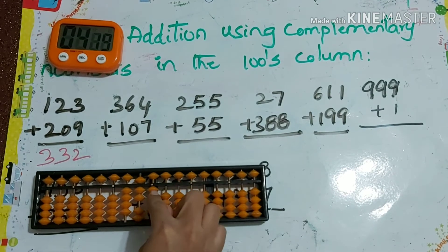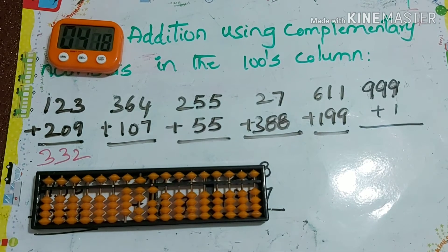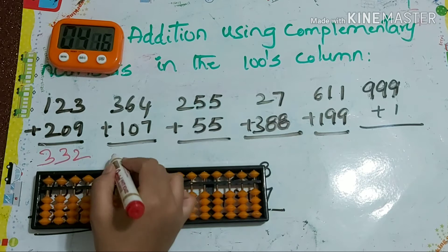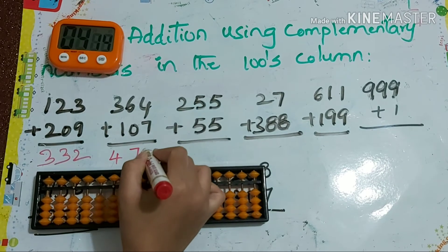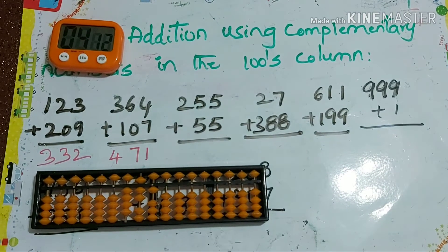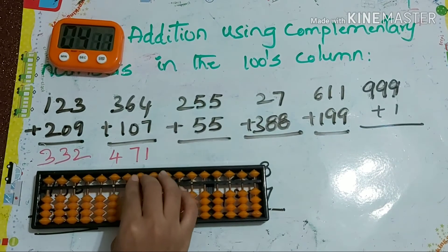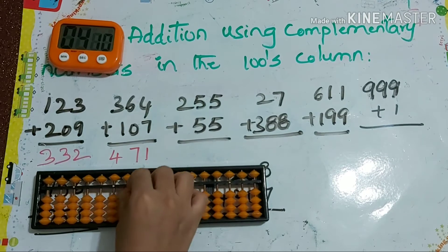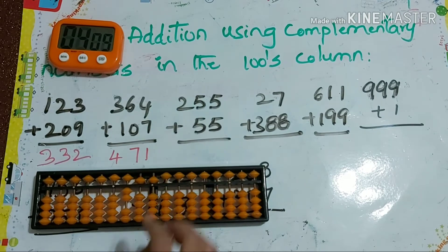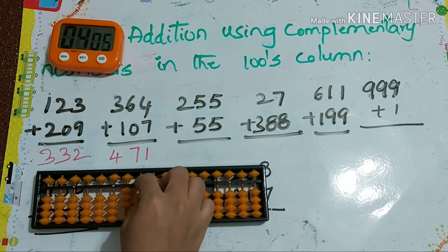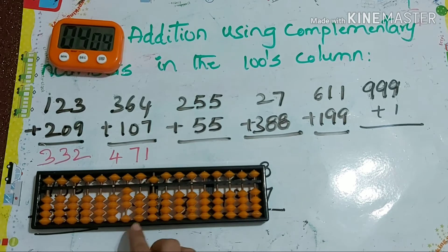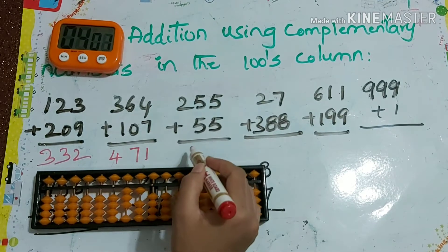Next: 364 plus 107. To add 7, we use plus 10 minus 3, so the answer is 471. Next: 255 plus 55 — plus 10 minus 5, plus 10 minus 5 — so the answer is 310.